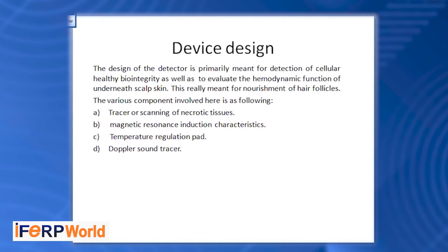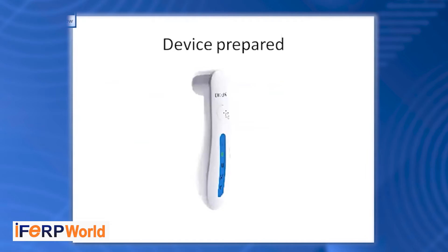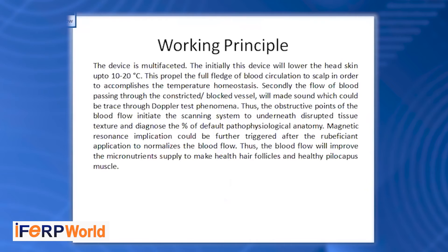Now we come to our device. This device, which we designed, traces the hair follicles, scans for necrosis, necrotic tissues, or tissue distortion. The design of the detector is meant to detect cellular biointegrity and evaluate the function of the skull skin. It traces or scans necrotic tissue, uses magnetic flux resonance to index characteristics, regulates device temperature, and has a Doppler sound producer. When the device detects any necrotic tissue or tissue distortion, the Doppler produces a sound, which is very useful for identifying tissue distortion or apoptosis.